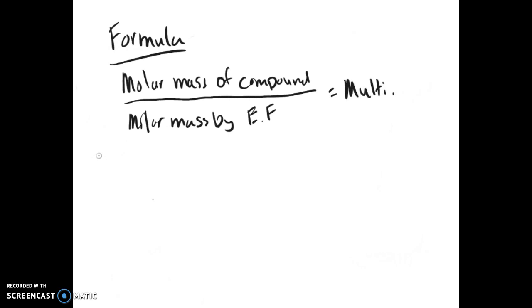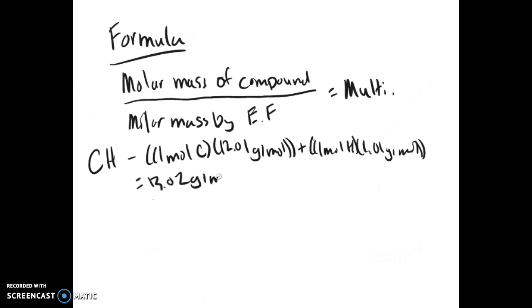Now for an example, let's say you determine something in the empirical formula to have a formula of CH. As you know, take one mole of carbon times its molar mass, one mole of hydrogen times its molar mass, which gives you 13.02 grams per mole.